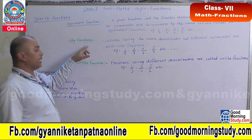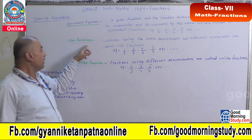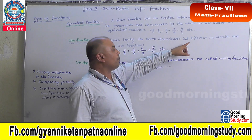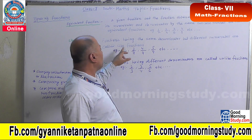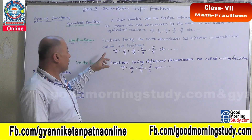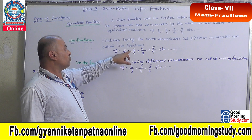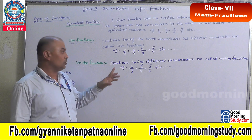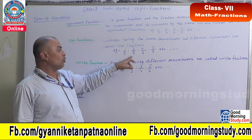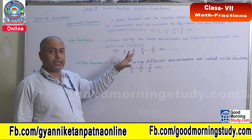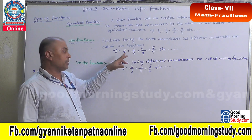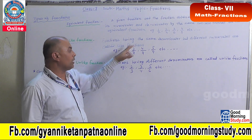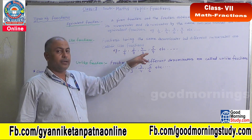The next type is like fractions. Fractions having the same denominator but different numerators are called like fractions. For example: 1 by 9, 2 by 9, 4 by 9, 5 by 9. You can see that the denominator of all fractions is the same — 9 — but the numerators are different: 1, 2, 4, 5. So these are called like fractions, because the denominator is the same.